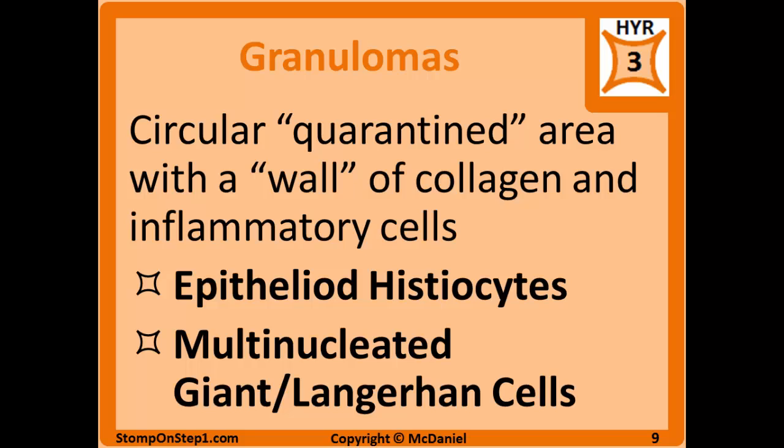Now we can move on to granulomas. When the body recognizes a material as foreign but can't eliminate it with any type of inflammation, it creates a circular wall of collagen and inflammatory cells around the material. This wall prevents the material from spreading and causing damage even though the body cannot destroy the noxious stimuli. Patients who can create these walled-off areas can remain asymptomatic even while infected, because the noxious material is quarantined — it's not gone, it's still in the body, but walled off so it can't do anything.